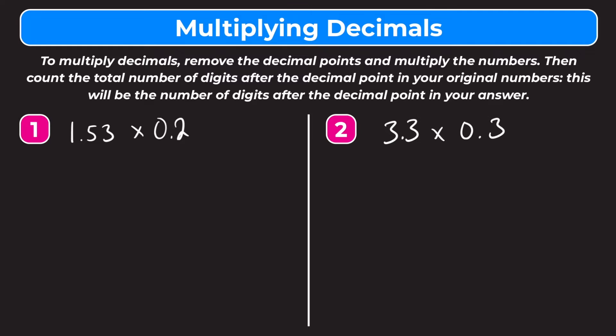Let's try number one. We have 1 and 53 hundredths times 2 tenths. So we remove the decimal points and rewrite this as 153 times 2.